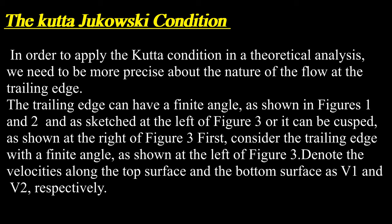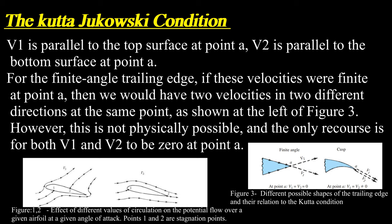First, consider the trailing edge with a finite angle as shown at the left of figure 3. Denote the velocities along the top surface and the bottom surface as V1 and V2, respectively. V1 is parallel to the top surface at point A, and V2 is parallel to the bottom surface at point A. For the finite angle trailing edge, if these velocities were finite at point A, then we would have two velocities in two different directions at the same point, as shown at the left of figure 3.